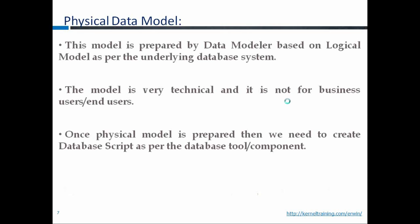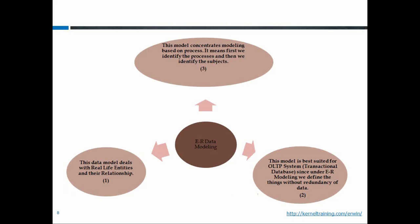In ER data modeling, the basic concepts are entities and relationships. An entity is anything in this world that can be distinguished from everything else. We identify entities by discussing requirements with the client. Two ways are used: if you have domain knowledge, you can identify subjects and processes directly; if not, you can use English grammar — noun-based words represent master entities, and verb-based words represent transaction entities.